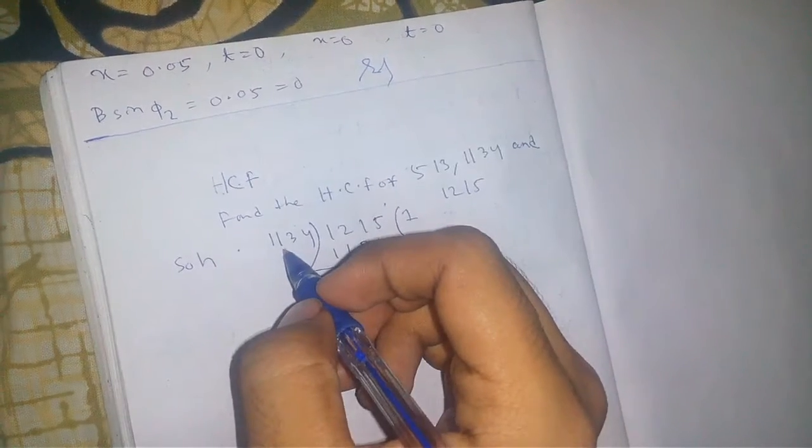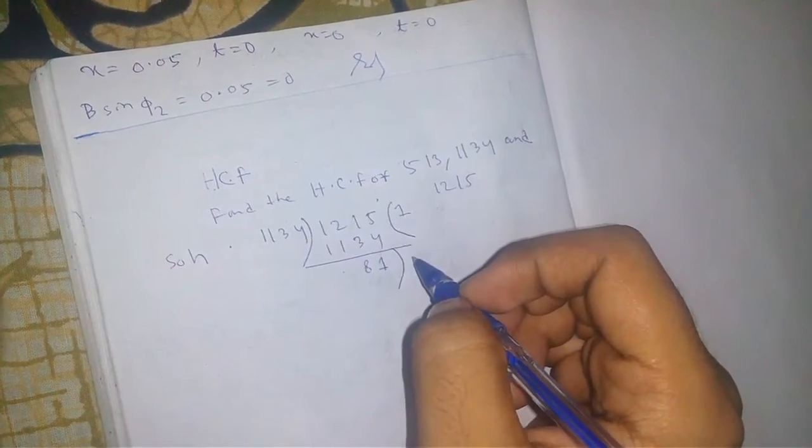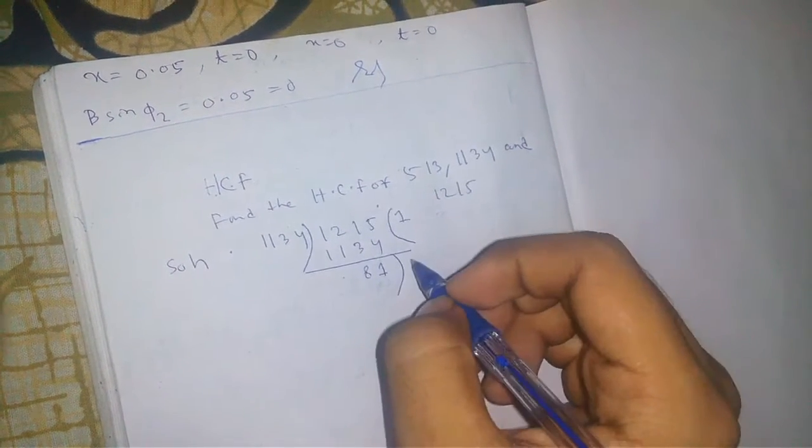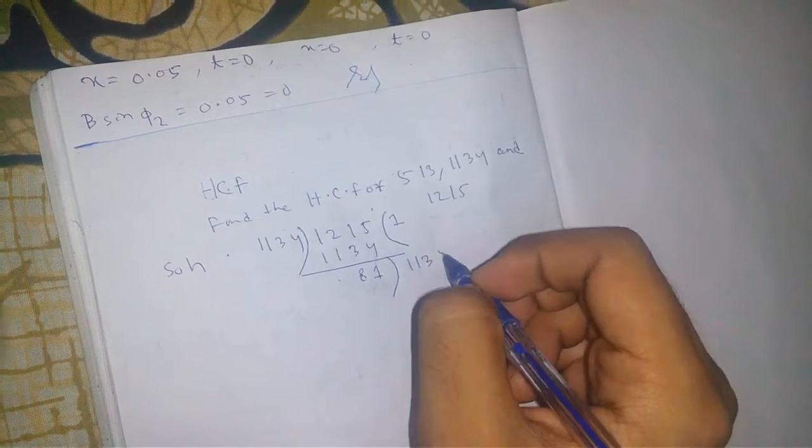Now, the divisor 1134 becomes the dividend. We will write 1134 here.